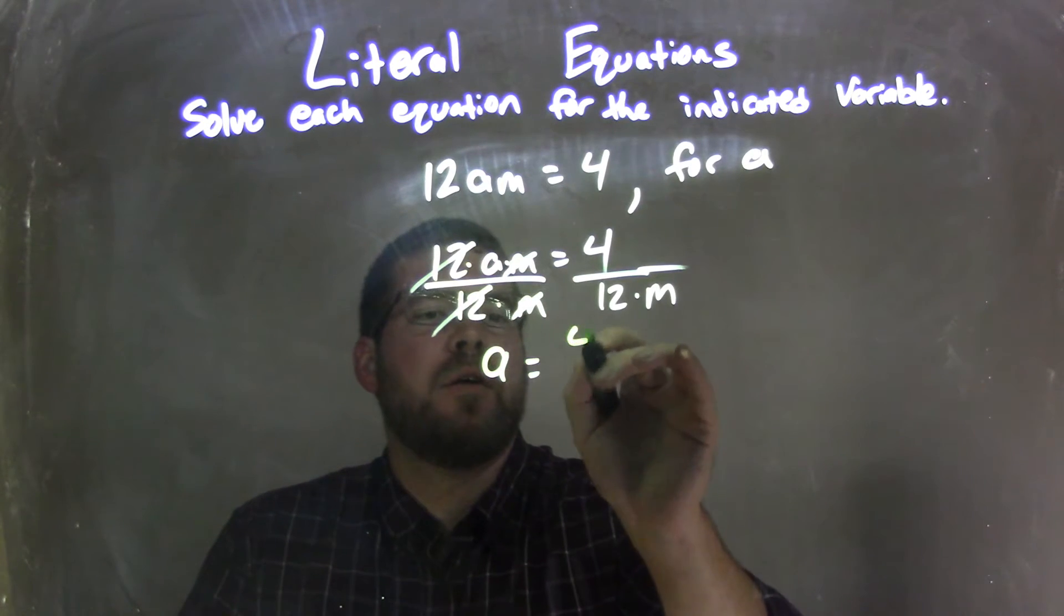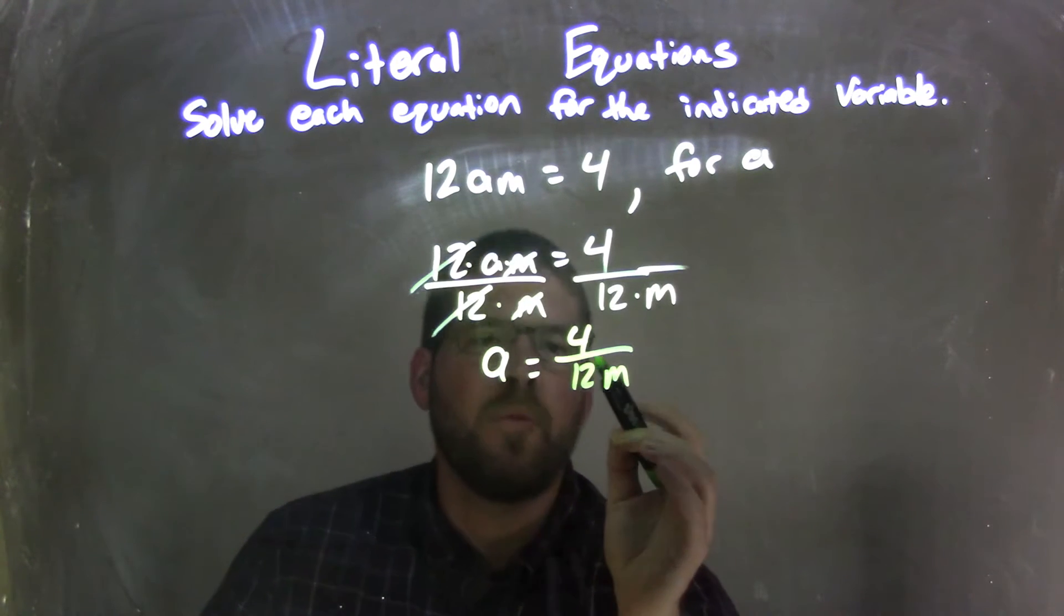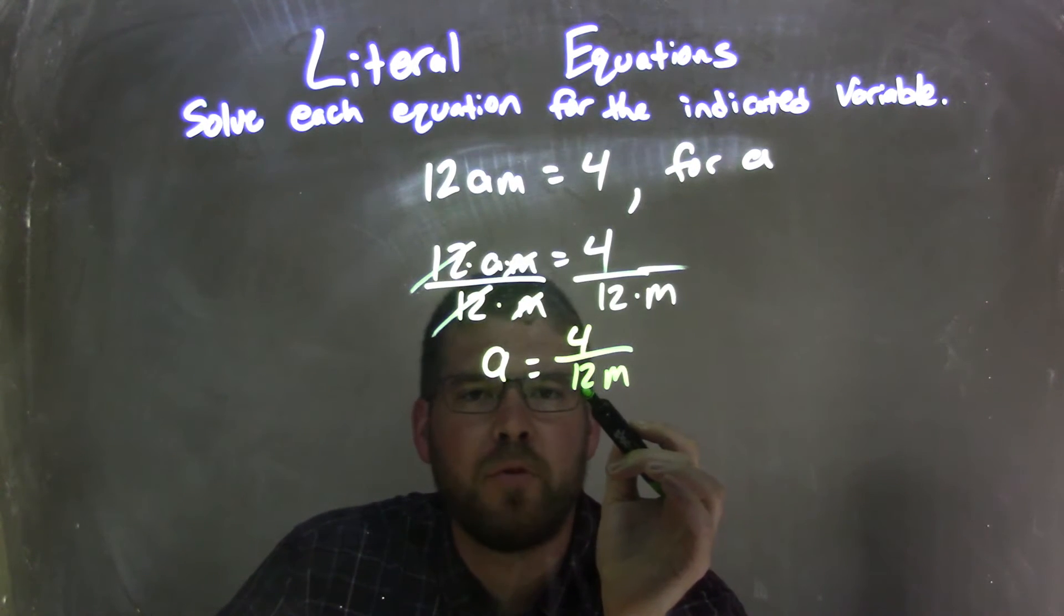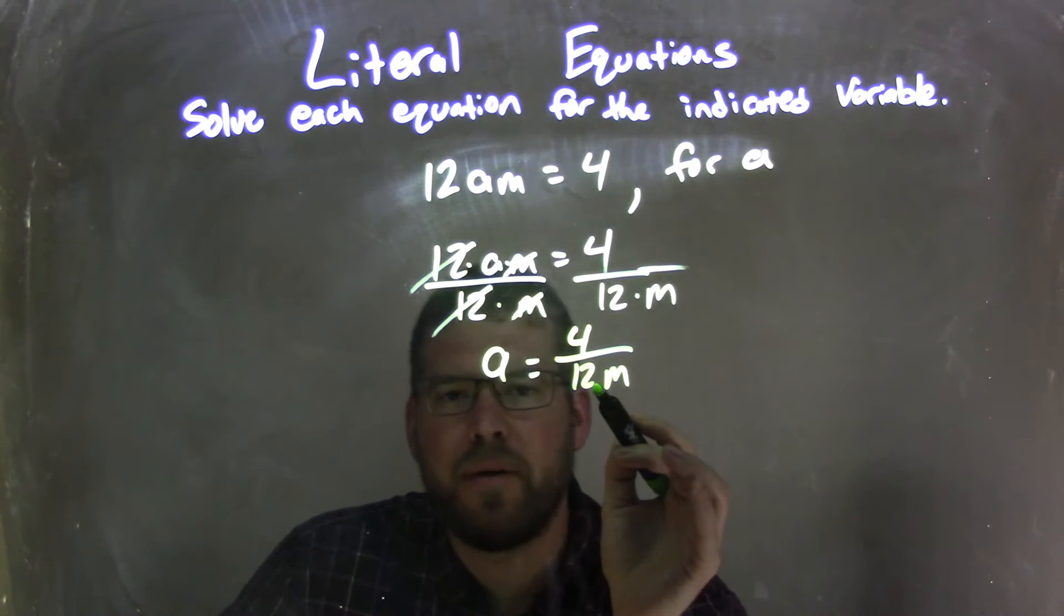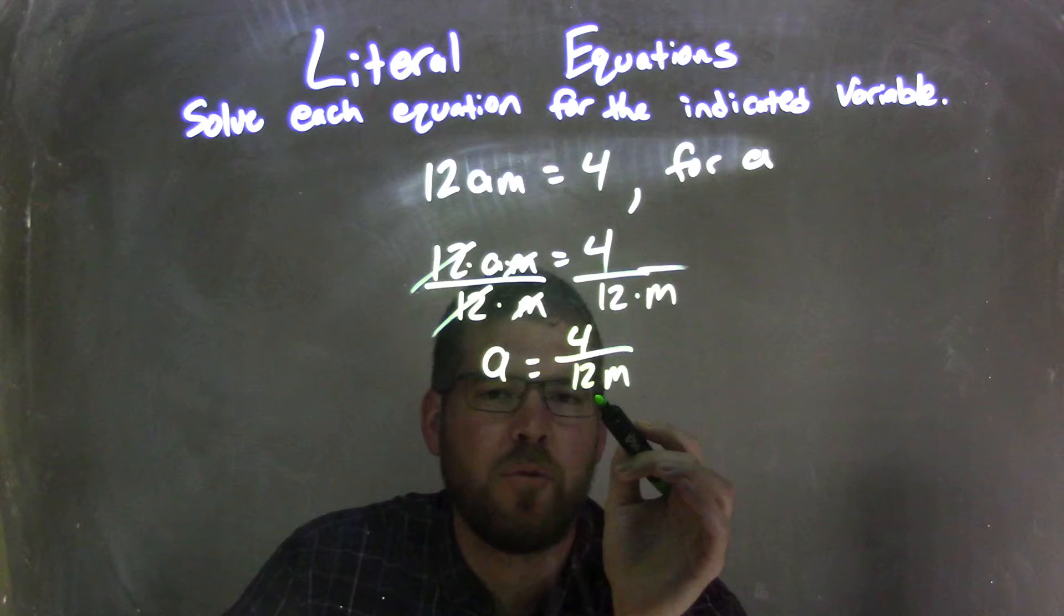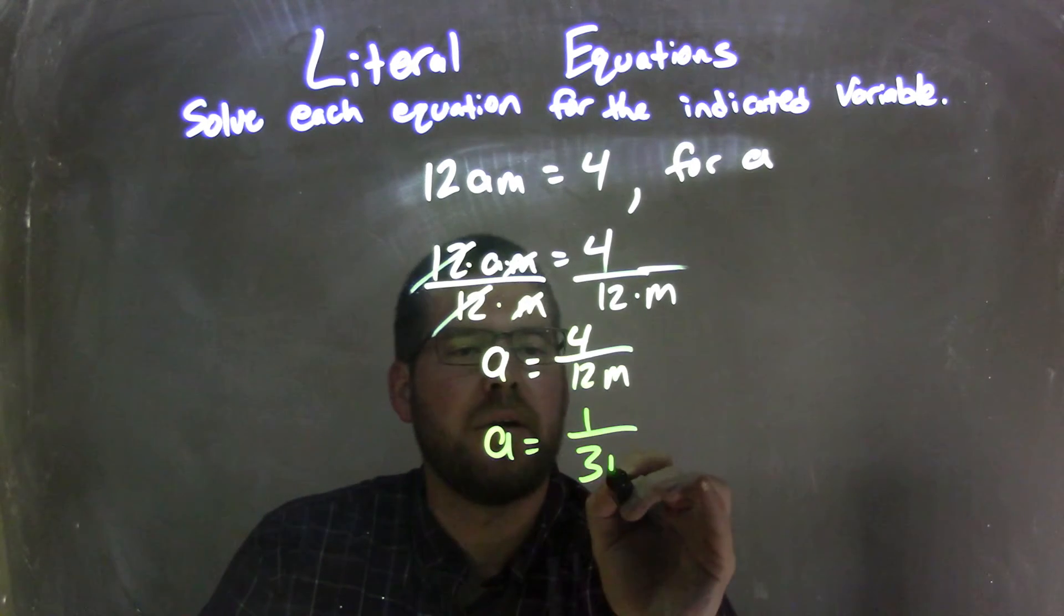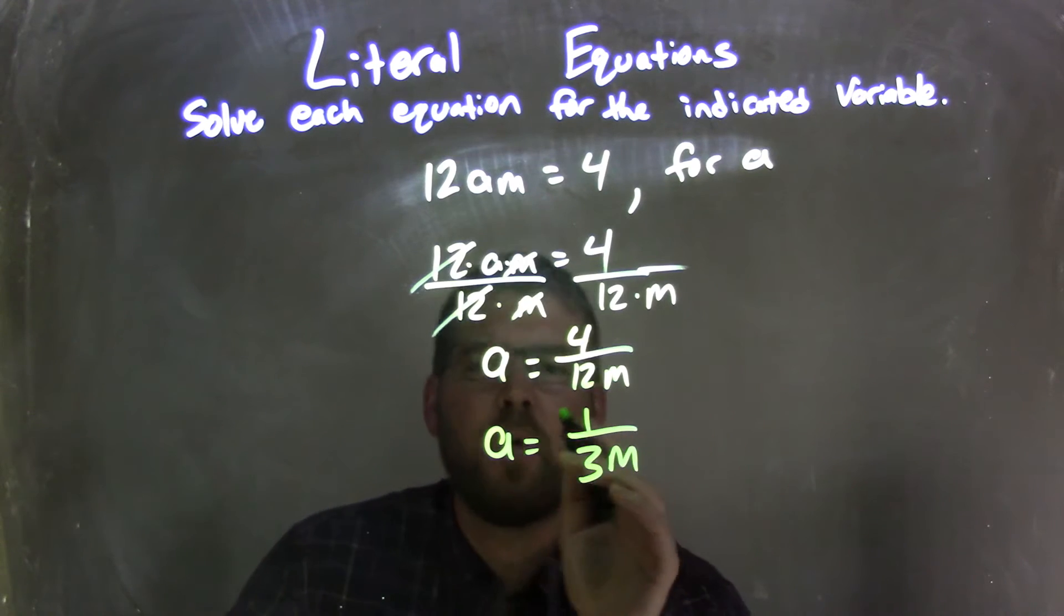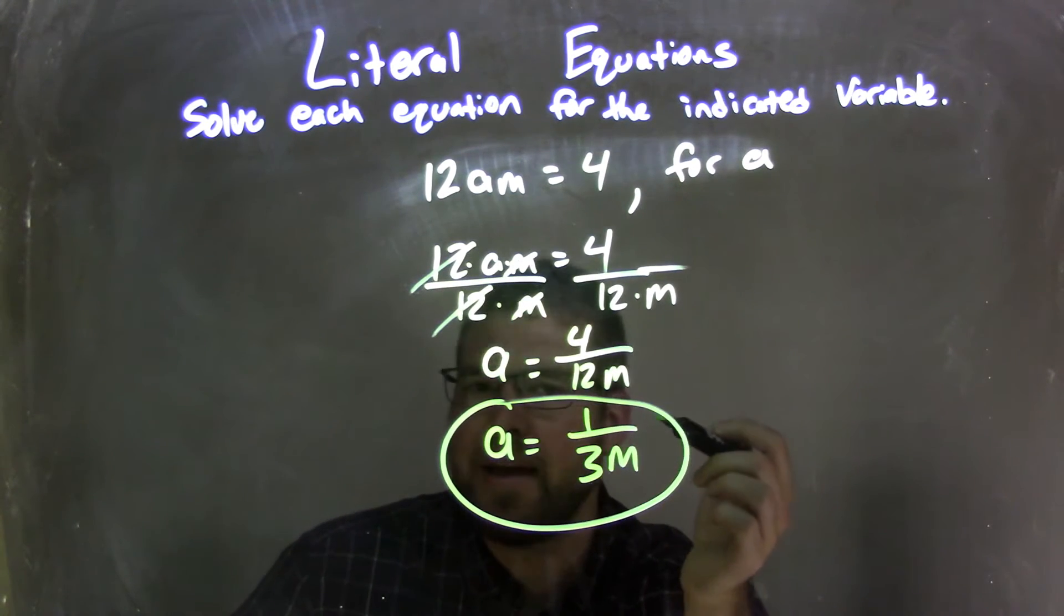Well, let's rewrite that here. 4 and 12, well, what's 4 divided by 12, right? If I've divided both by 4, I have 4 divided by 4 is 1, and 12 divided by 4 is 3. So I can simplify the fraction 4 twelfths into 1 third, and then the M stays there. So we have a final answer here of A equals 1 over 3M.